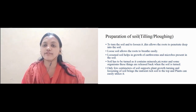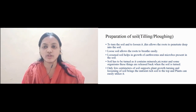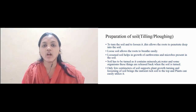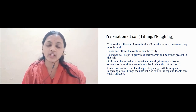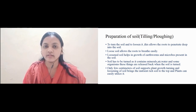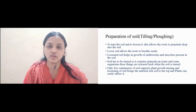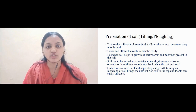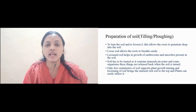Let us start with the first step that is preparation of soil, which is also called as plowing or tilling. So what is plowing and tilling? Plowing and tilling are the steps included in preparation of soil, that is preparation of land. A farmer first of all plows his land with the help of a plow.